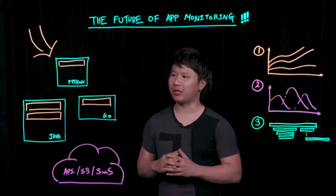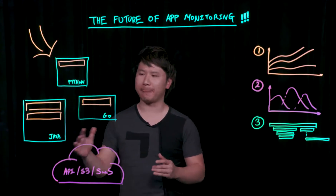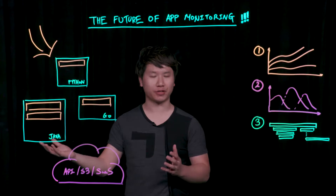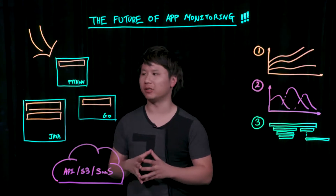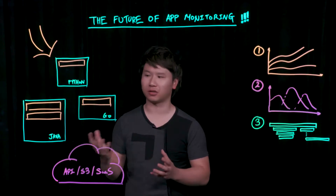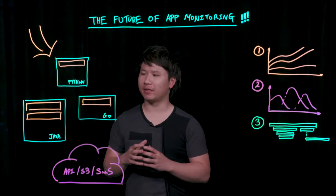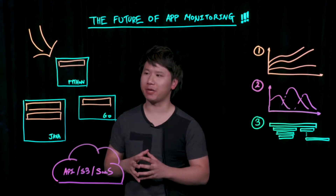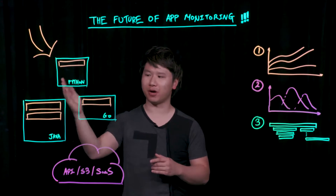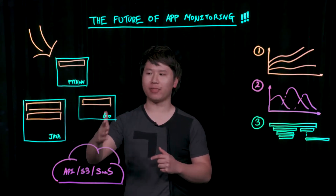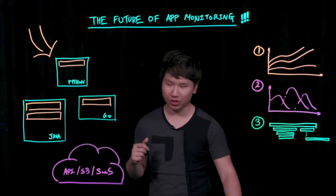I want to go with a very simple example here where it's a microservice framework. It doesn't matter where you're running it — it could be bare metal, it could be on Docker, it could be on Kubernetes. More and more often, we're seeing people run applications such as Python, Java, and Go, and they're interoperating heterogeneously.